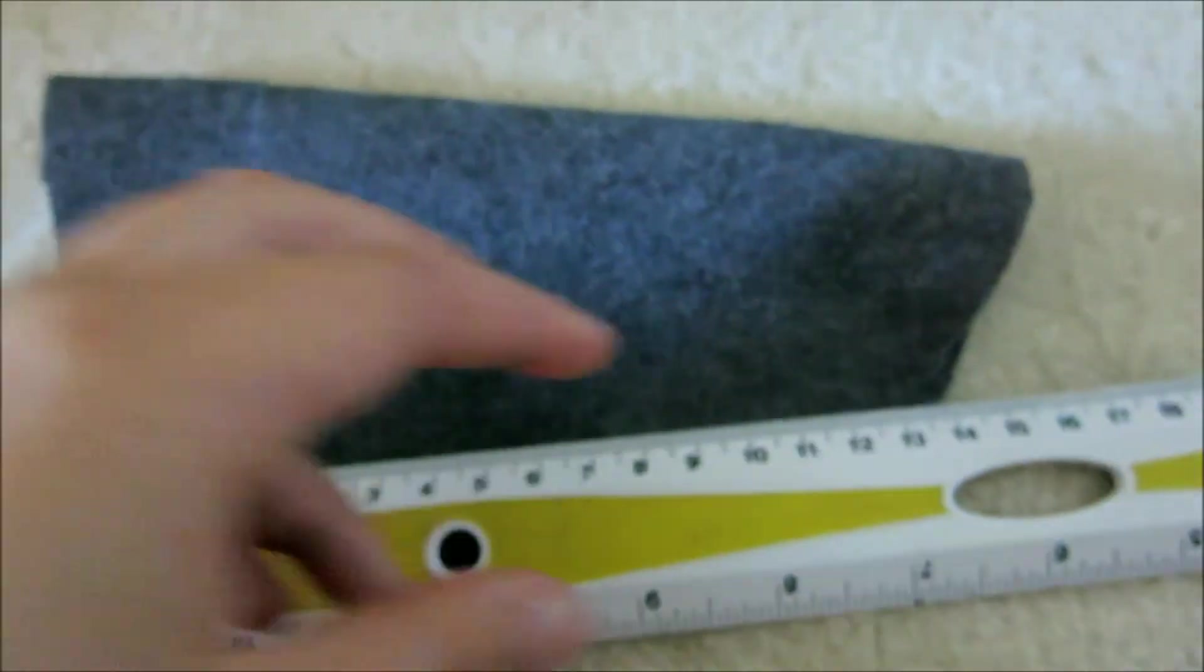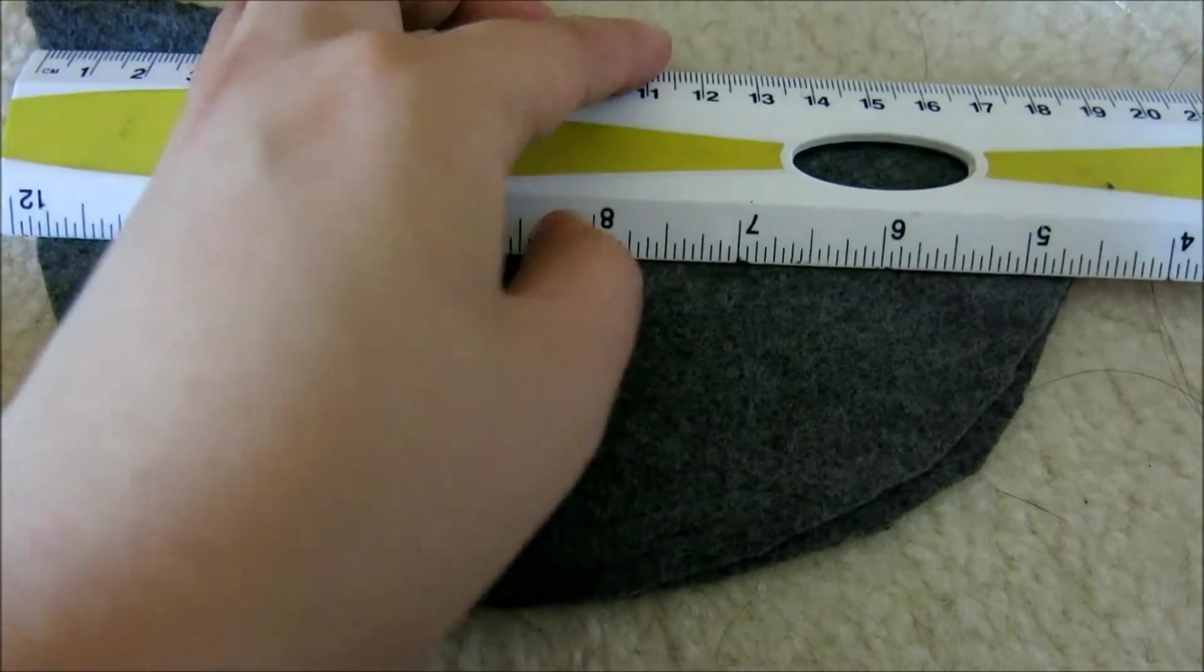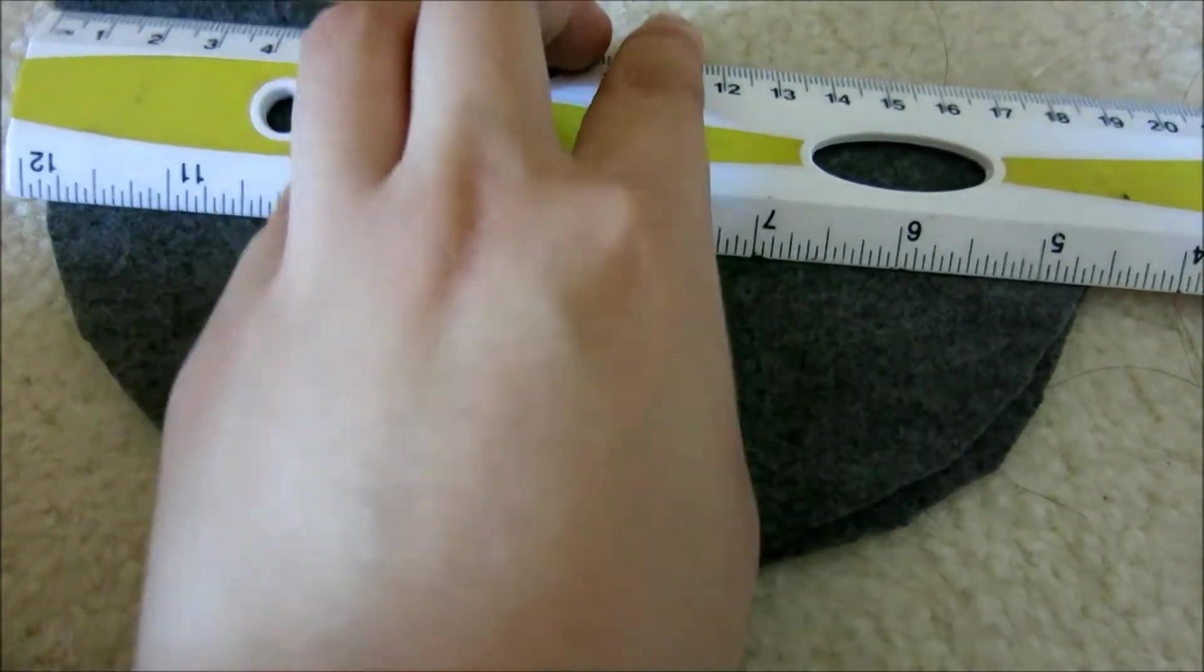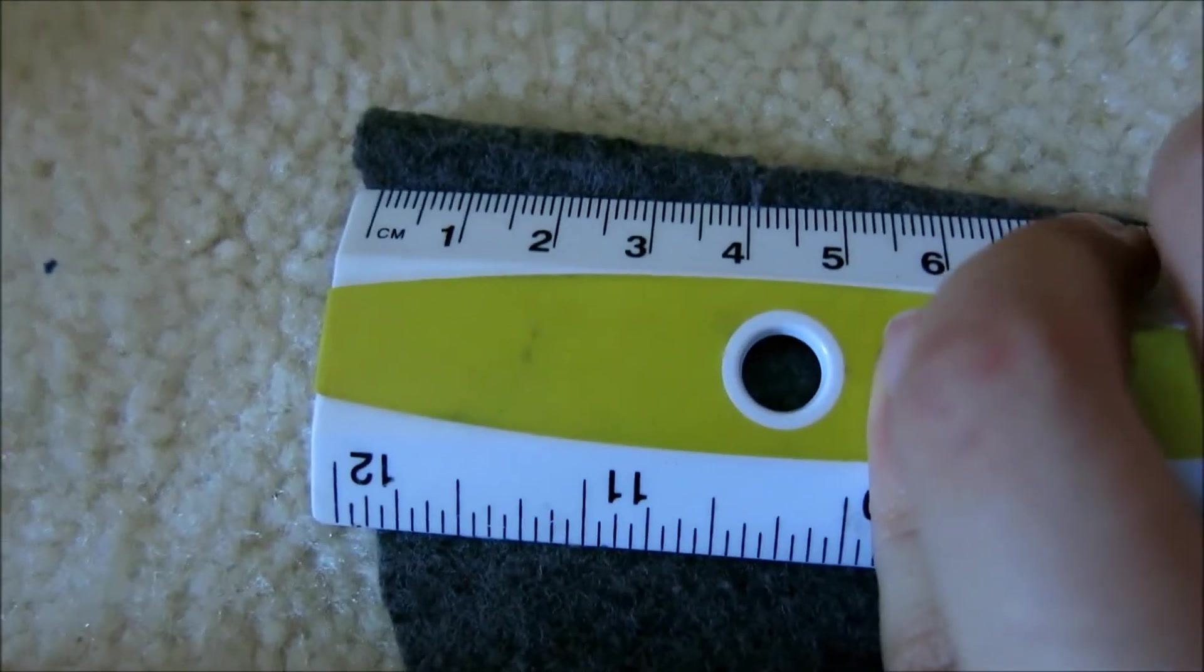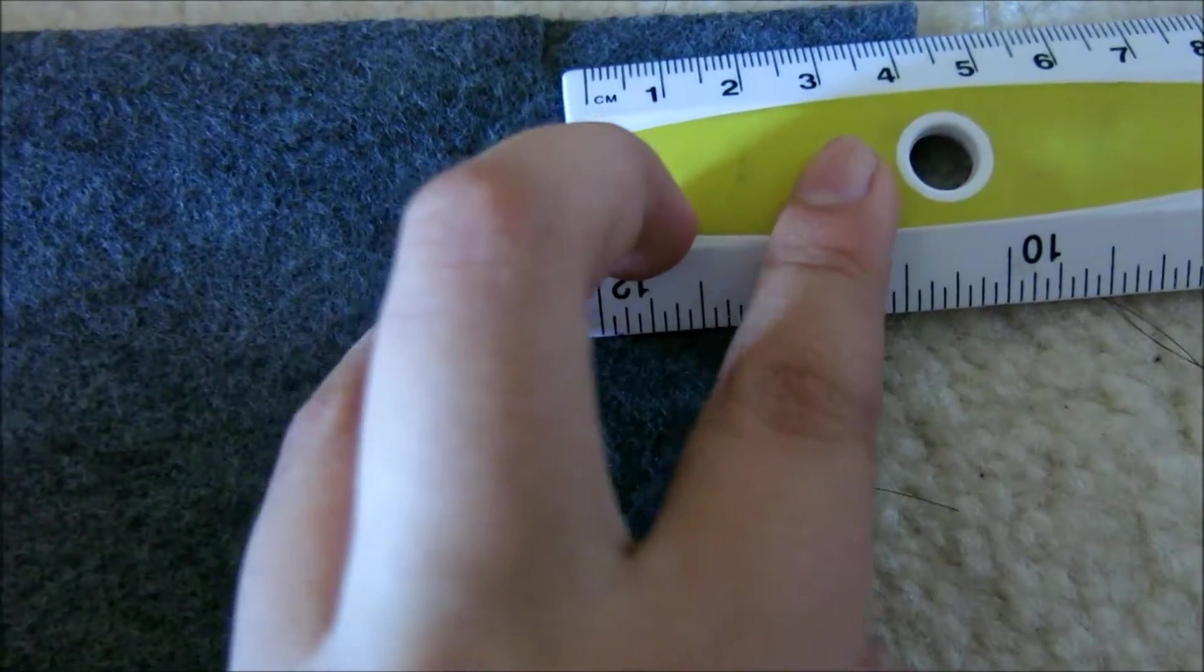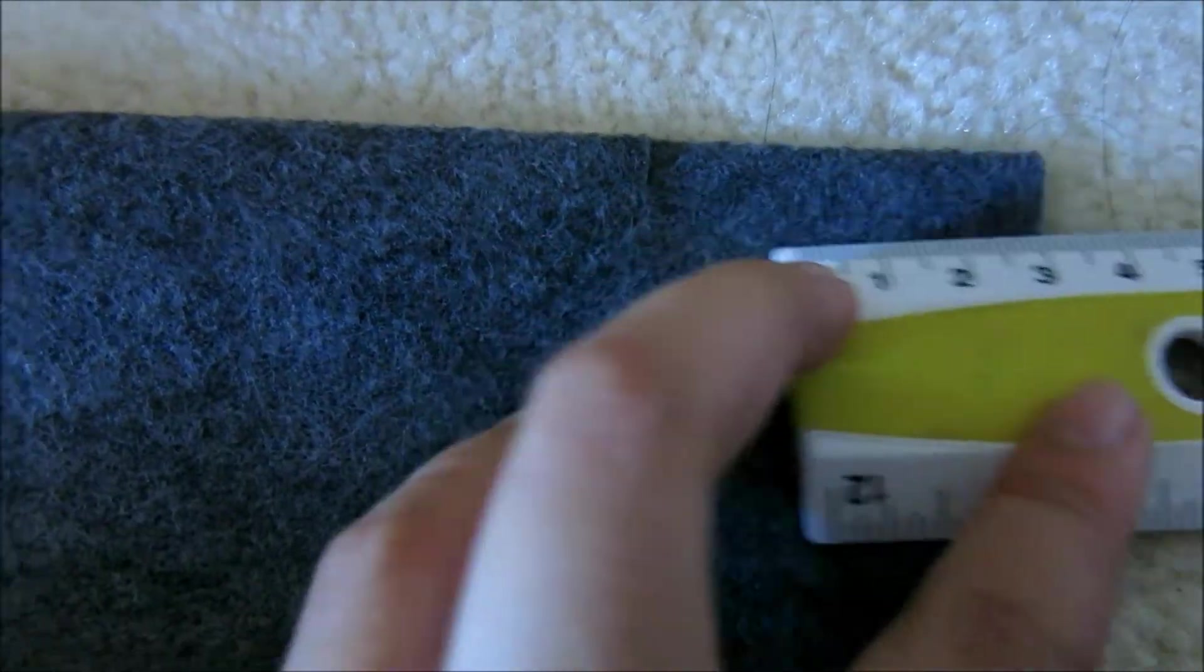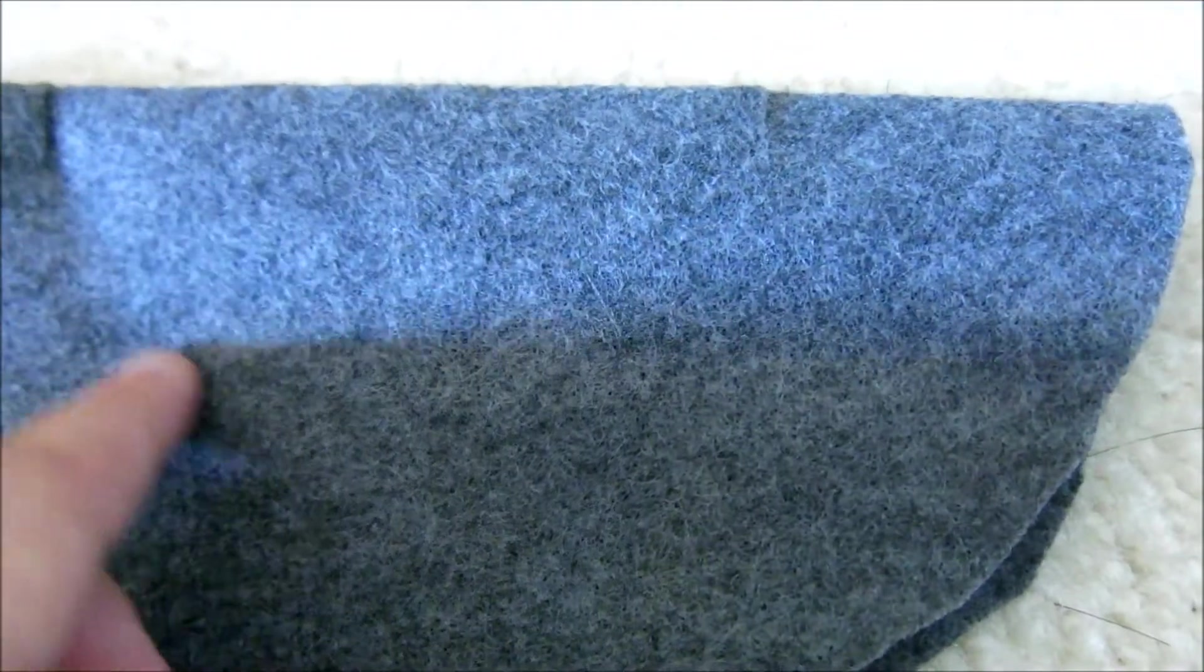Now with your circle folded in half, you're going to want to go in 4 and a half centimeters from each side of your circle. And then you're going to want to cut a slit and you're going to do this on both sides, and then you're going to turn these marks into a circle and then cut that out.